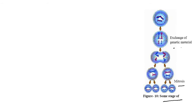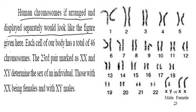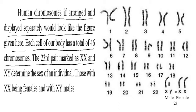This shows some stages of mitosis and the exchange of genetic material, which is growth in our body. Human chromosomes are arranged and displayed separately. Each cell of our body has a total of 46 chromosomes.